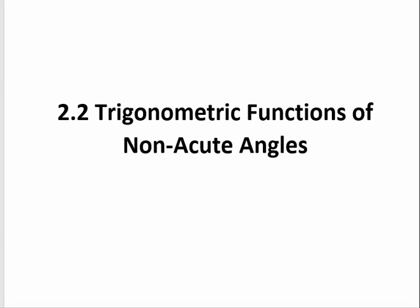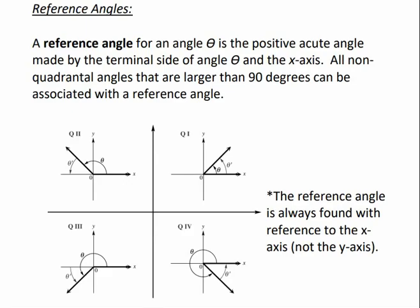Section 2.2: Trigonometric Functions of Non-Acute Angles. A reference angle for an angle theta is the positive acute angle made by the terminal side of angle theta and the x-axis. All non-quadrantal angles larger than 90 degrees can be associated with a reference angle. The reference angle is always found with reference to the x-axis, not the y-axis.